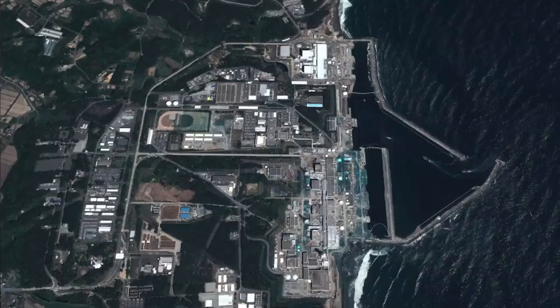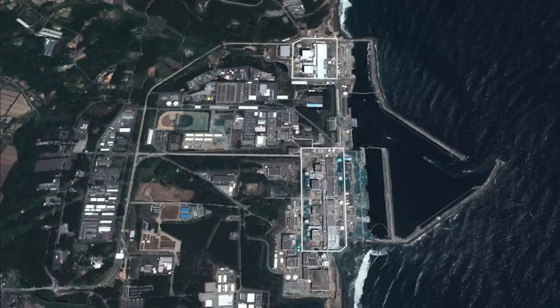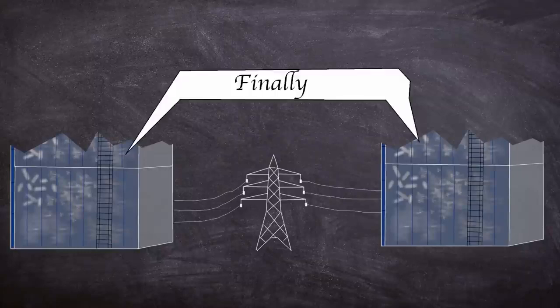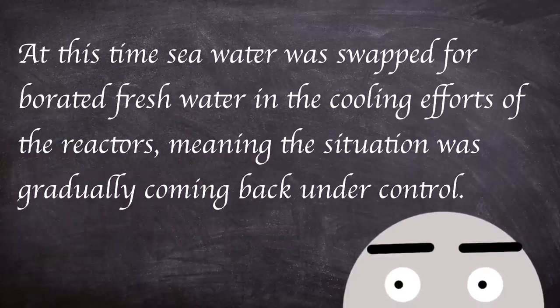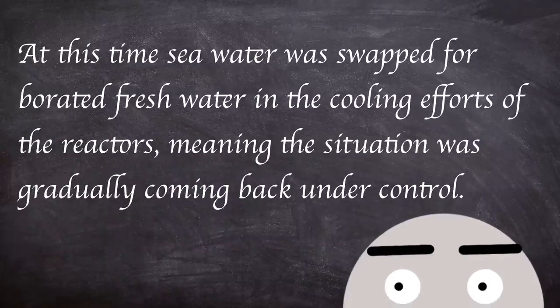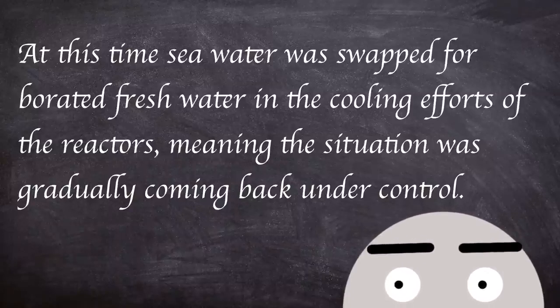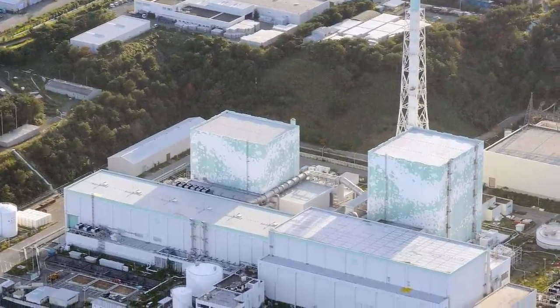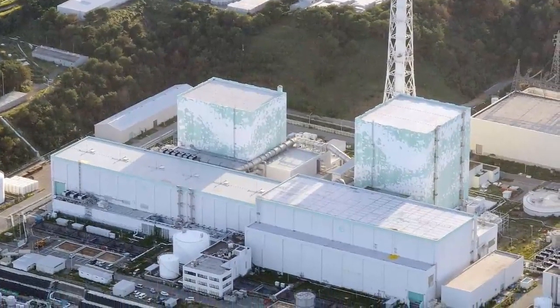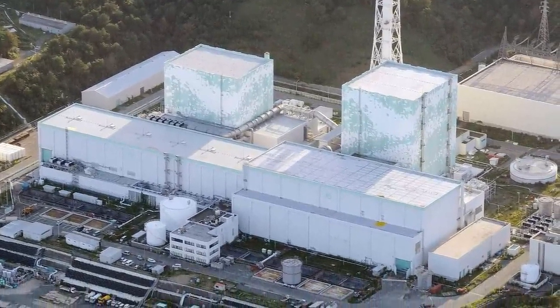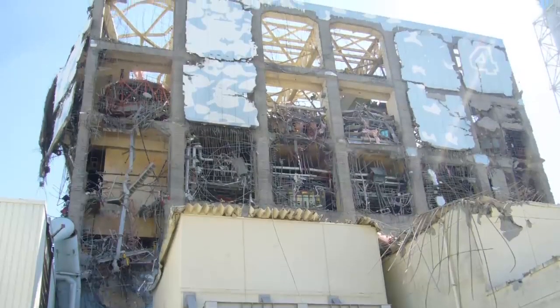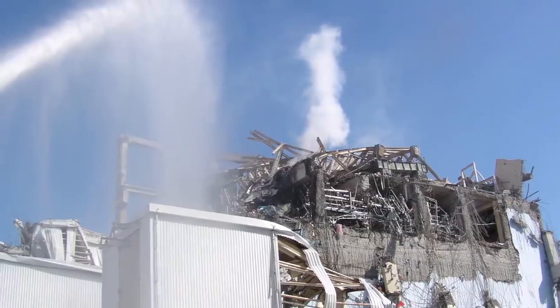Later on into March power was gradually restored to units 1 to 4, with units 5 and 6 receiving power from the only working air-cooled generator. Units 3 and 4 were the last to receive power after being completely cut off for more than two weeks. At this time sea water was swapped for borated fresh water in the cooling efforts of the reactors, meaning the situation was gradually coming back under control. Unit 5 was the first to be put into cold shutdown mode at 14:30 on the 20th of March 2011. This was followed by unit 6 at 19:27 on the same day. However, the remaining units had a long journey ahead as a more stable situation was achieved in April 2012.